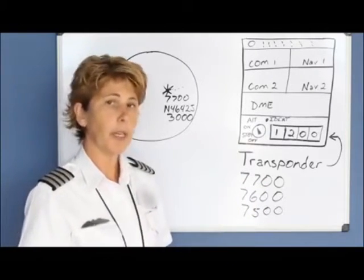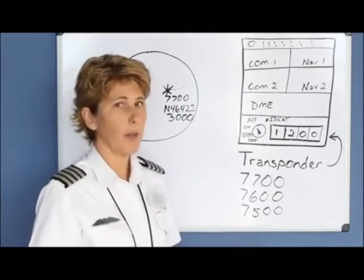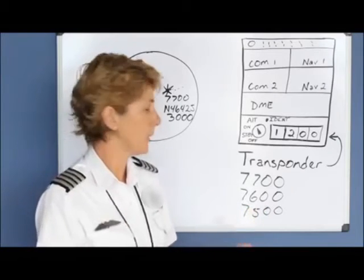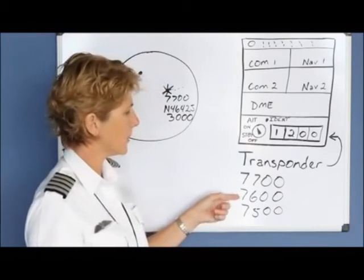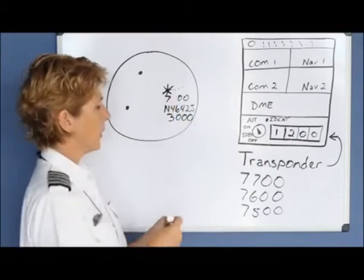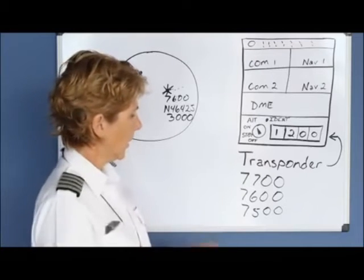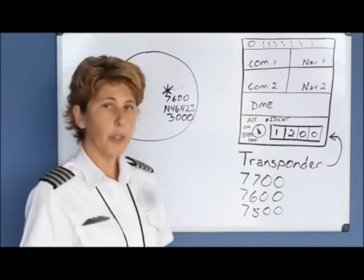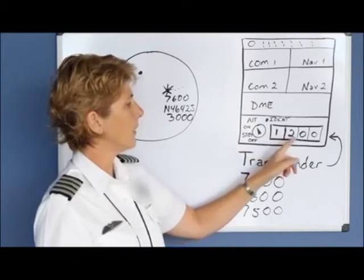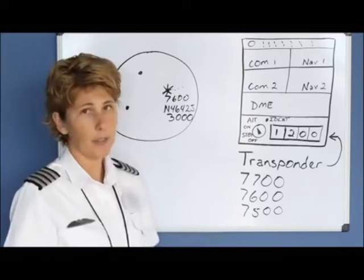7600 is reserved for communication failure. If your radio stopped working — either you can't hear them, they can't hear you, or neither of you can hear each other — you would put 7600 in, and it would show up on their radar scope that you are having communication failure. 7500 is used for hijack; if you're being hijacked, you put 7500 in and it shows up on their radar scope so they know you're being hijacked.